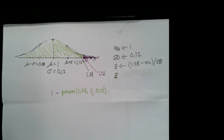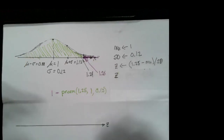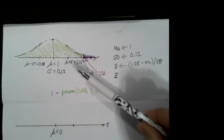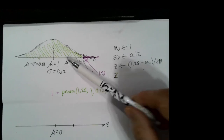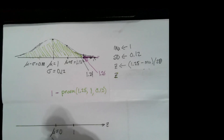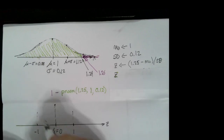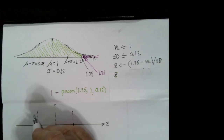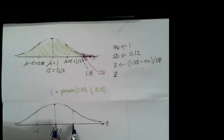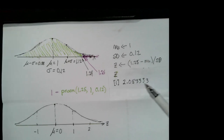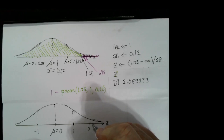Now let's draw the standard normal curve — we're translating this normal curve to a standard normal. The mean translates to 0, since it's zero standard deviations from the mean. The value 1.12, one standard deviation above the mean, translates to 1, and 0.88 translates to -1. The high point occurs at the mean, with values at one standard deviation being about 60% of that height, concave down in the middle and concave up in the tails. Our Z value of 2.0833 is a little above 2 on this curve.